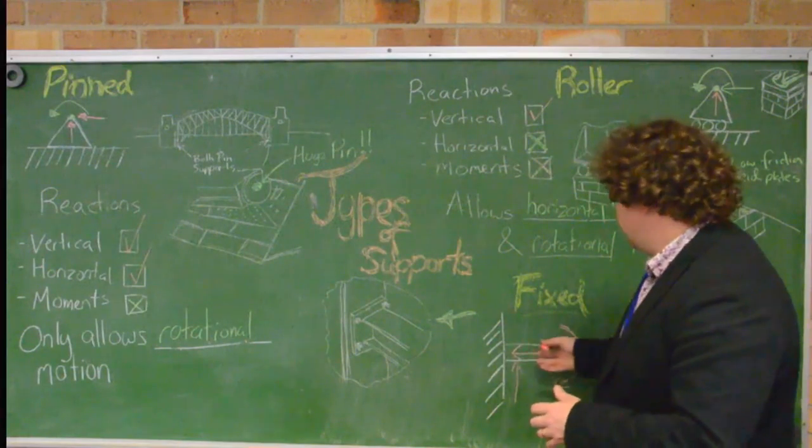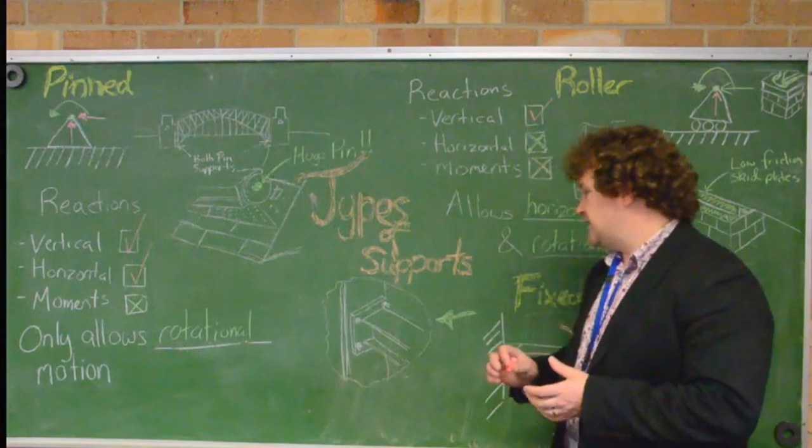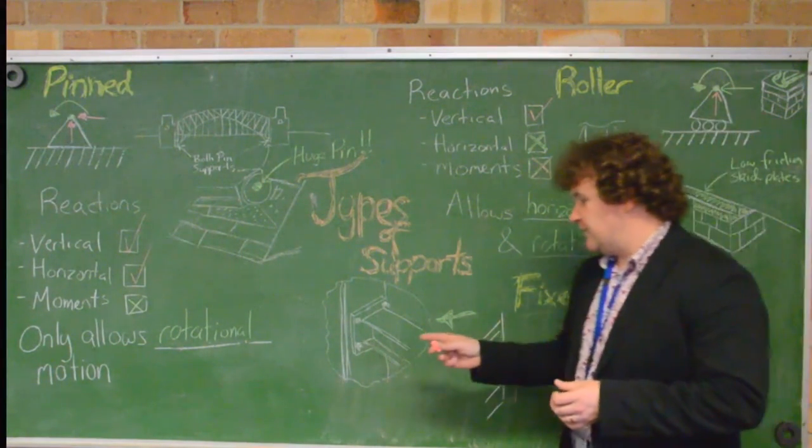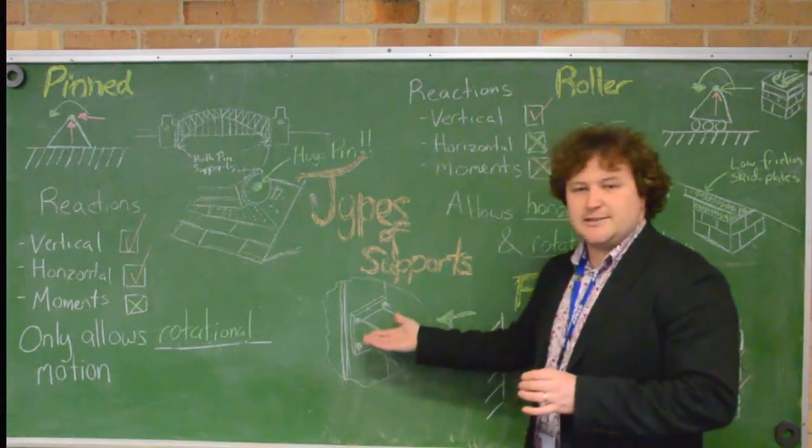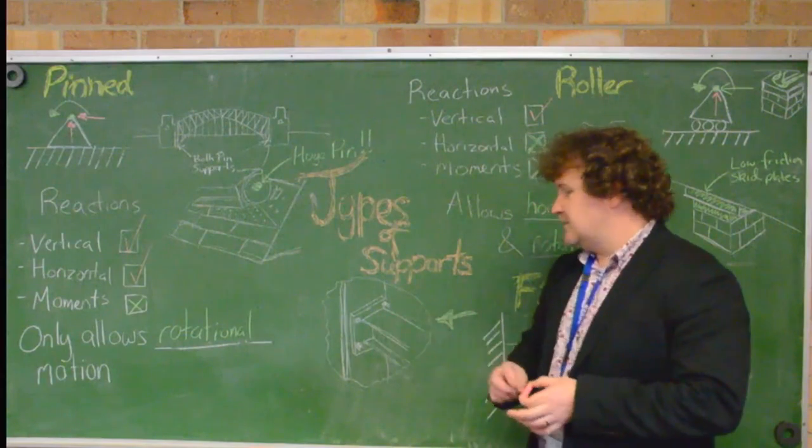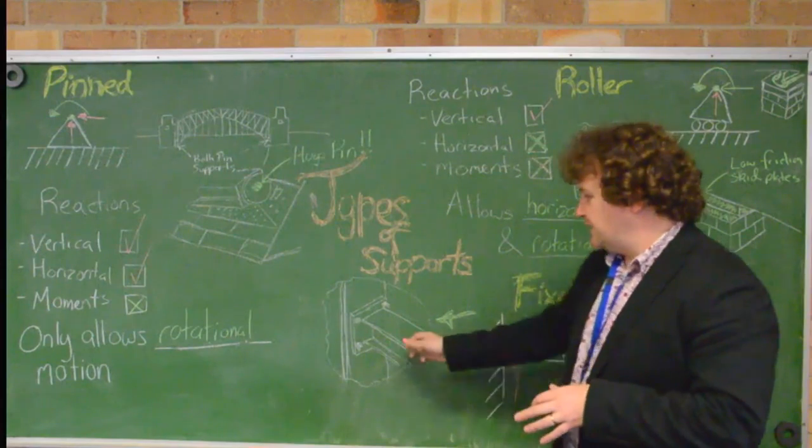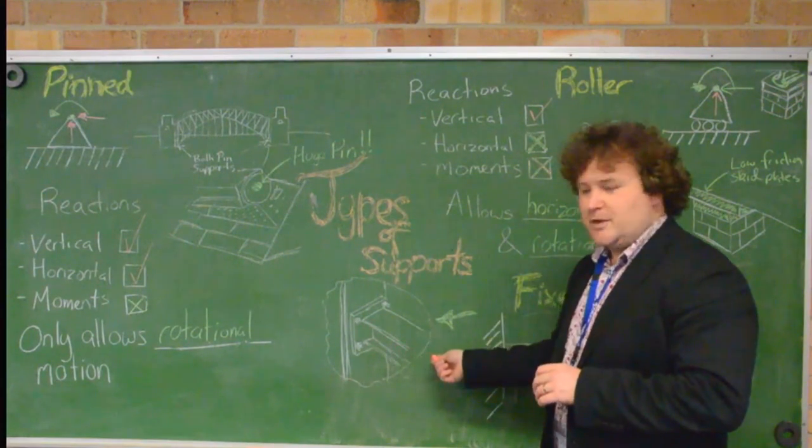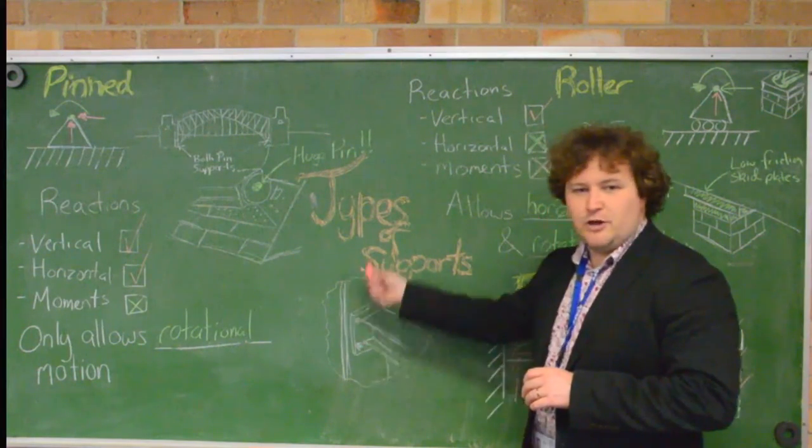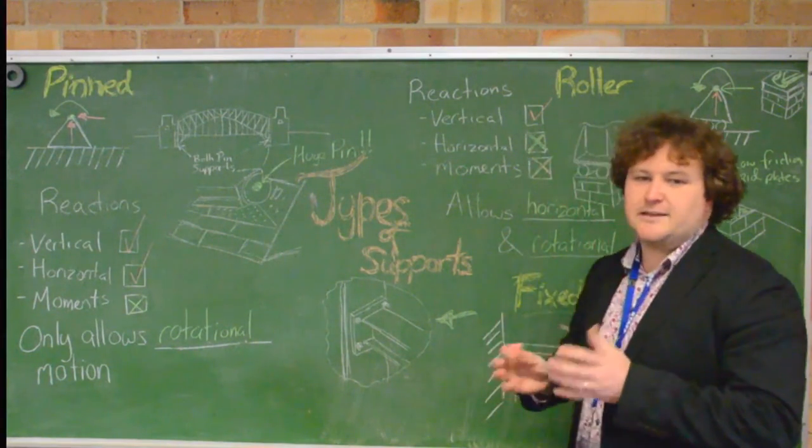And this type of joint is often looked at in beams, particularly like cantilever beams, beams that need to resist bending and twisting. But also lots of structures actually made with fixed joints, whether it's welded in place or whether it's bolted with lots of bolts rather than just with one that's allowing rotation. So in this example, it's like a horizontal beam is connected to a vertical column with lots of bolts holding it in place in a fixed way.